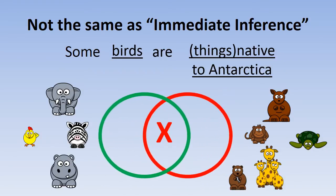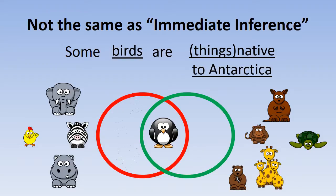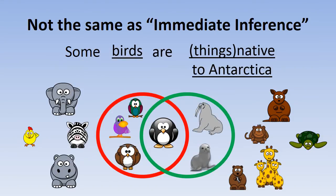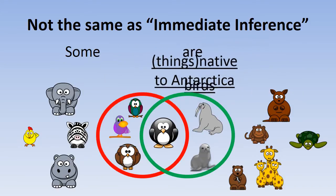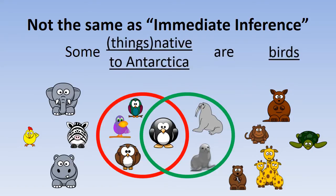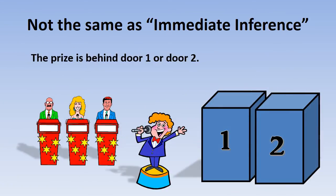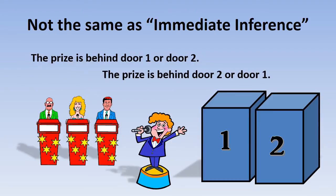For example, if somebody says some birds are things that live in Antarctica, that just means there's something in this overlapping category between birds and things that live in Antarctica — you can say that some things that live in Antarctica are birds. Similarly, if somebody says the prize is behind door number one or door number two, and you just switch the terms to door number two or door number one, you're not trying to prove anything — it's just an immediate inference from the claim you started with.